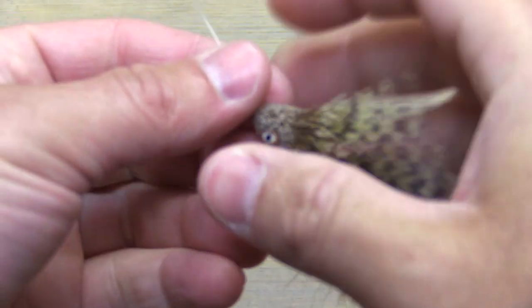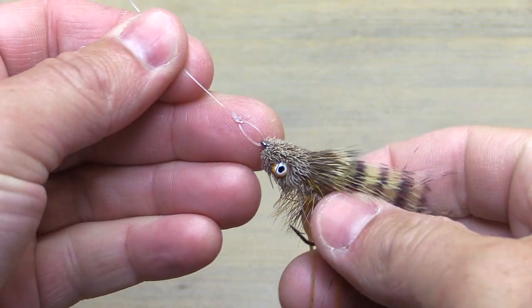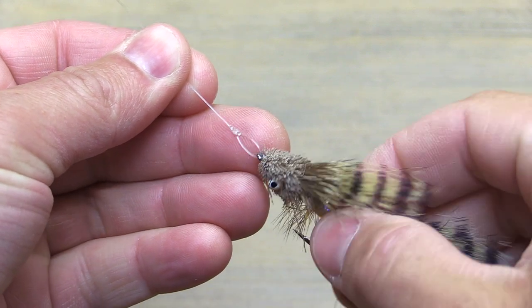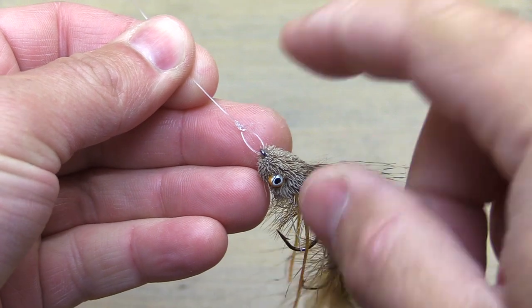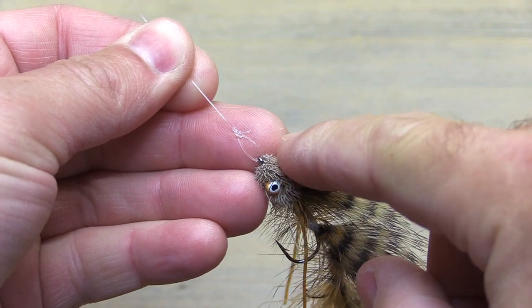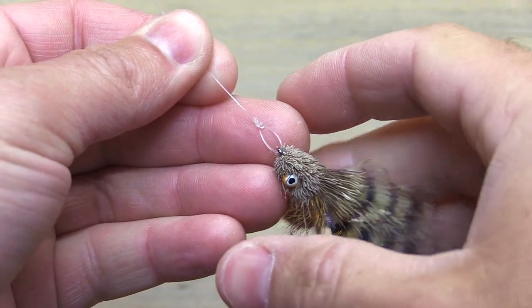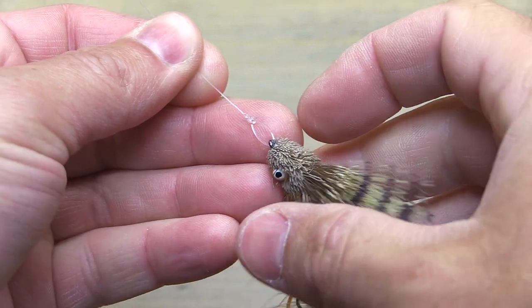In today's video we're going to be tying the Cray Loop. This is a non-slip loop knot that gives your streamers free moving action on the end of your line. And the tag end on this knot faces rearwards which is important and different than the Rapala knot that's already out there.